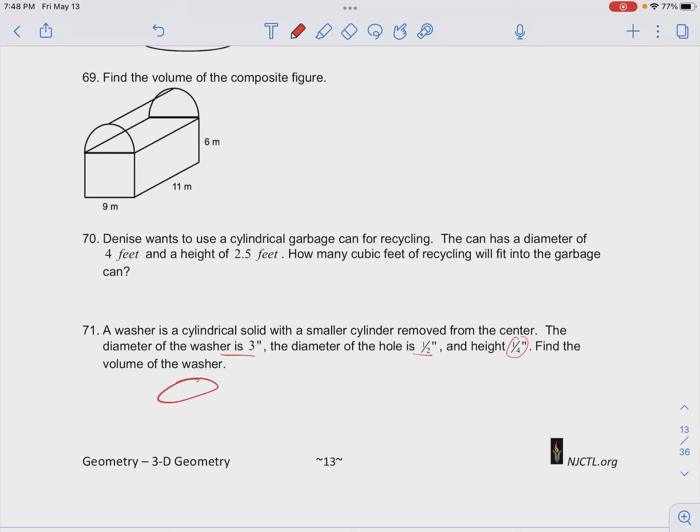So we have our washer that looks like this. We have a circle in the middle cut out. So our outside diameter is 3 inches, our inside diameter here is 1/2 inch, and our height is 1/4 inch.